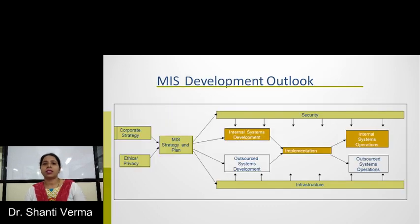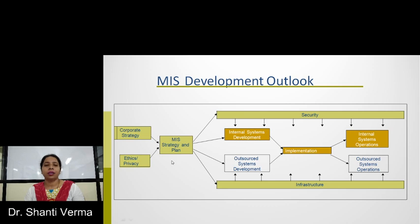Let's first discuss the MIS Development Outlook. In this figure you can see that there is a corporate strategy and ethics privacy. On the basis of these two, MIS strategy and plan is decided by the top management. And then with the help of the MIS strategy and plan, security and infrastructures are designed for any organization.